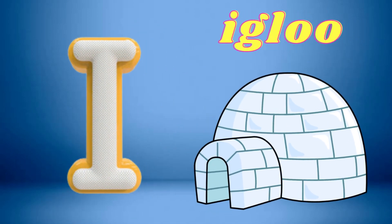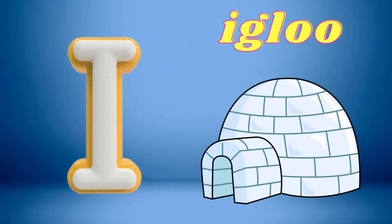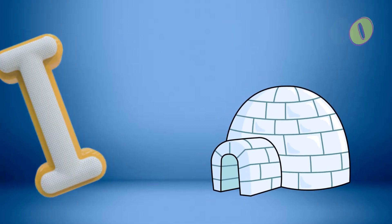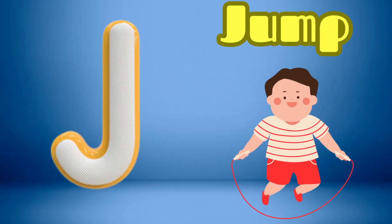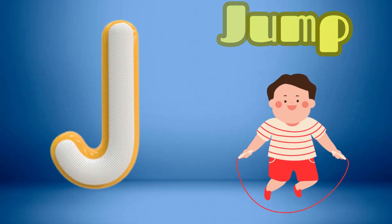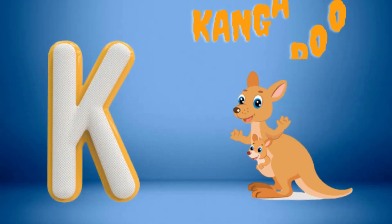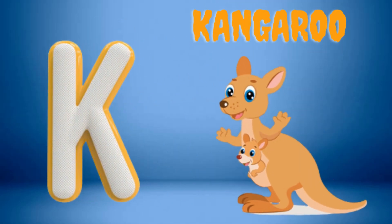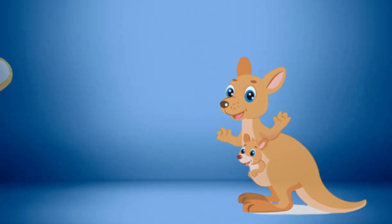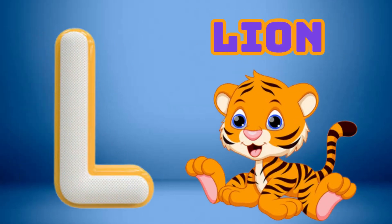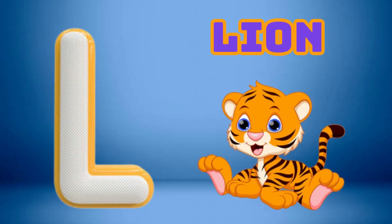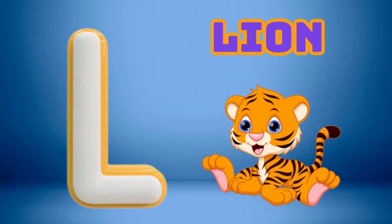I is for Igloo, I-I-Igloo. J is for Jump, J-J-Jump. K is for Kangaroo, K-K-Kangaroo. L is for Lion, L-L-Lion.